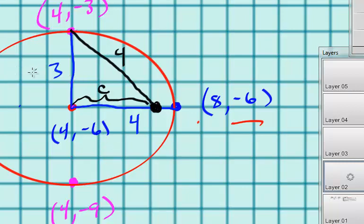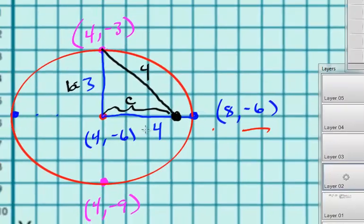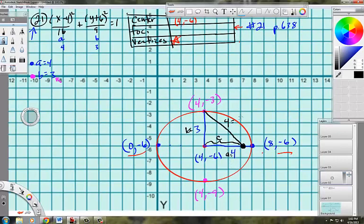This is b, almost called that a again, this is little a, which means this is also a. So our equation for the Pythagorean theorem for this is b squared plus c squared equals a squared.